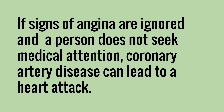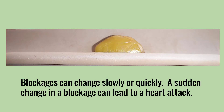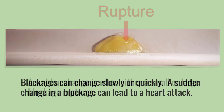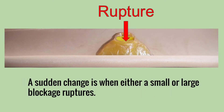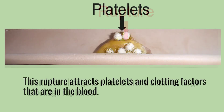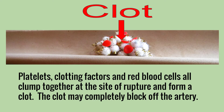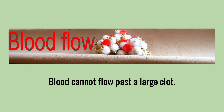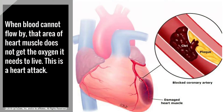Blockages can change slowly or quickly. A sudden change in a blockage can lead to a heart attack. A sudden change is when either a small or large blockage ruptures. This rupture attracts platelets and clotting factors that are in the blood. Platelets, clotting factors, and red blood cells all clump together at the site of rupture and form a clot. The clot may completely block off the artery, and blood cannot flow past a large clot. When blood cannot flow by, that area of heart muscle does not get the oxygen it needs to live. This is a heart attack.